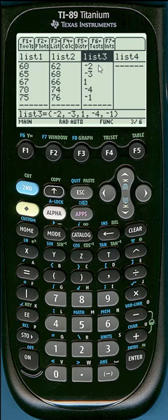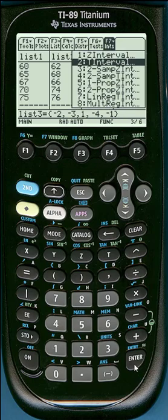To do the confidence interval we already have our list set up here. We'll now go to F7 for intervals by clicking second and F2, and this is going to be a t-interval.